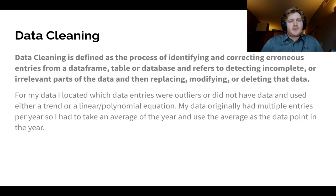So now we can move to data cleaning. The definition for data cleaning, it is defined as the process of identifying and correcting erroneous entries from a data frame, table, or database, and refers to detecting incomplete or irrelevant parts of the data and then replacing, modifying, or deleting that data. In my case, for my data, I located which data entries were outliers using the box and whisker plot, which we will get to later, or did not have data, and used either a trend or a linear/polynomial equation. My data originally had multiple entries per year, and I had to take an average of the year and use the average as the data point in the year.